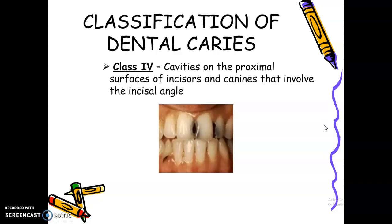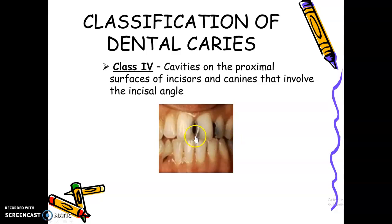Then we go to Class 4. Class 4 are cavities on the proximal surfaces of anterior teeth that involve the incisal angle. Take note — the cavity should start on the proximal, then extend to the incisal angle. If the cavity started on the incisal edge going to the incisal angle, then that's not Class 4. The cavity should start on the proximal surface involving the incisal angle.